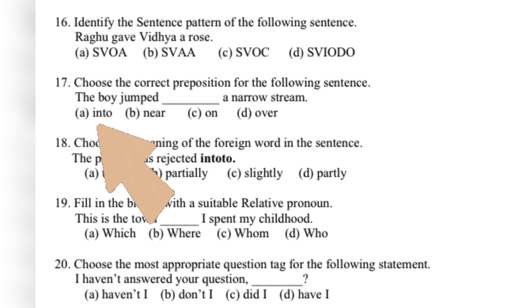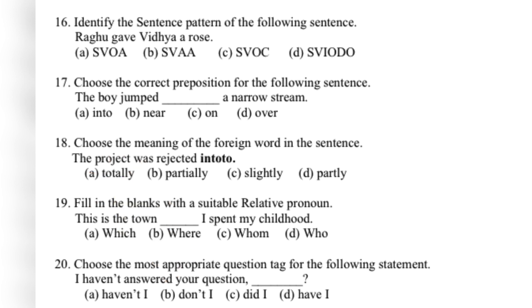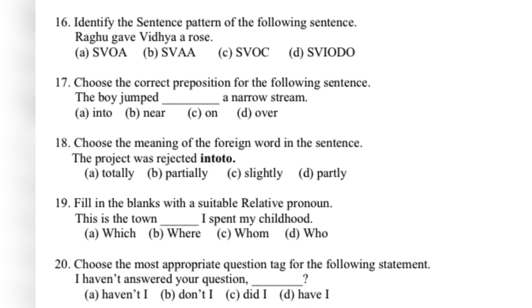'The boy jumped into a narrow stream.' Jump into is a phrasal verb meaning to enter totally into a foreign world. 'This is the town where I spent my childhood' — where refers to the place. 'I haven't answered your question' — the sentence is negative, so the question tag will be positive: have I. That is the answer.